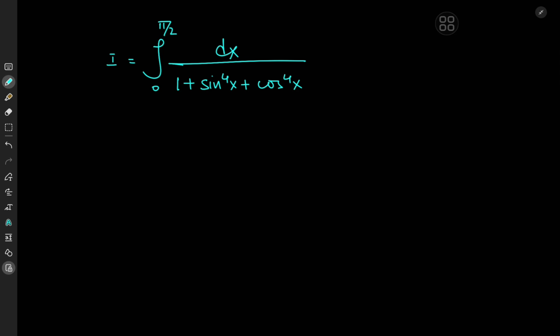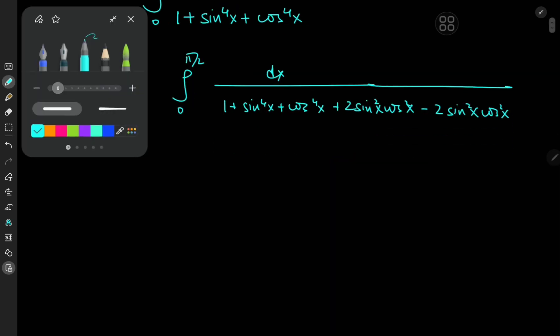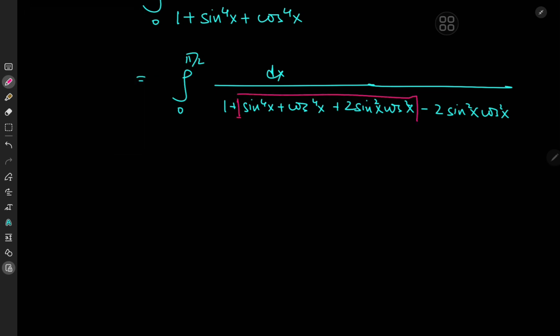What I want to do here is expand the denominator by 0, and the very special version of 0 I'm going to use is: we have the integral from 0 to pi by 2 of dx divided by 1 plus sine to the 4th power of x plus cosine to the 4th power of x plus 2 times sine square x cosine square x minus 2 sine square x cosine square x. Notice that I can just collect these terms here as sine square x plus cosine square x squared, which we know equals 1 squared, which is of course 1.